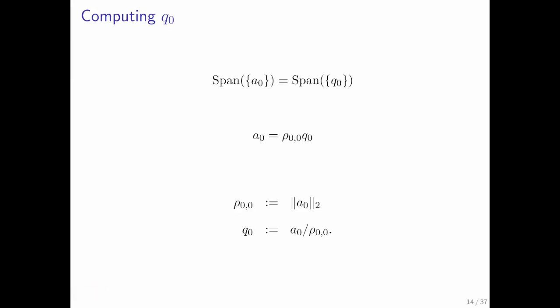If it's in the same direction and we take into account that q0 has length 1, if a0 is supposed to be equal to rho_{0,0} times q0, and we have the flexibility of picking q0, then we can pick rho_{0,0} to be the length of a0, and q0 then becomes a0 divided by that length. We saw that before. And certainly the span of a0 is the same as the span of q0, because these two vectors differ only in their length.